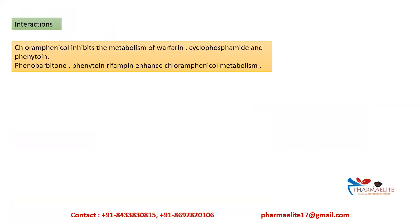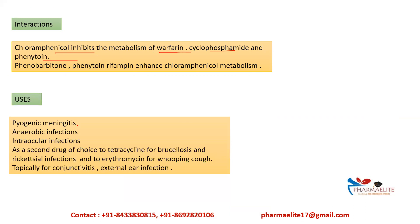Interactions: chloramphenicol inhibits the metabolism of warfarin, cyclophosphamide, and phenytoin. Phenobarbitone, phenytoin, and rifampin enhance chloramphenicol metabolism by enzyme induction. Uses include: pyogenic meningitis and anaerobic infections; intraocular infections; as a second drug of choice to tetracycline for brucellosis and rickettsial infections; and to erythromycin for whooping cough. It is also used topically for conjunctivitis and external ear infections.